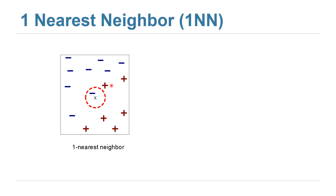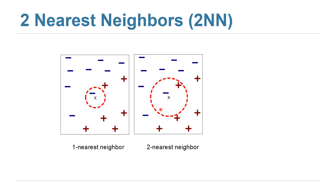We can generalize this idea and take the two most similar examples — the two nearest neighbors. If we find one positive and one negative among the two closest, we cannot make a clear decision. That's why we don't prefer to use two nearest neighbors or, more generally, we don't prefer K to be even, because we might have an equal number of positive and negative examples in the closest set.